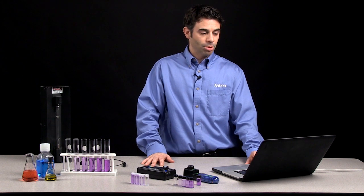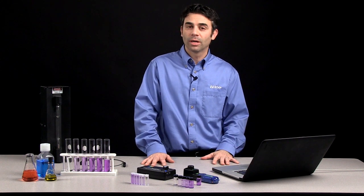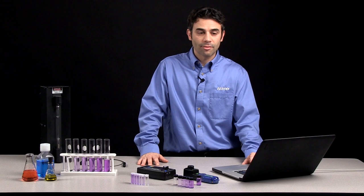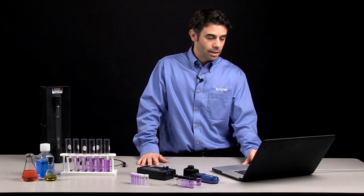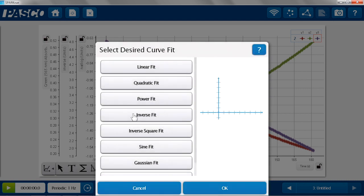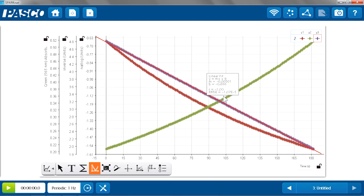And then I can apply those calculations onto the graph. And in this case, I put them onto the same graph using a multi-wide feature of SparkView. So I see my green absorbance, my inverse absorbance, and my natural log of absorbance. And I definitely noticed that the natural log of absorbance is the straightest line, indicating a first-order reaction. And again, we can quantify that a little bit more using the fit tools, in this case a linear fit, on that particular set of data.